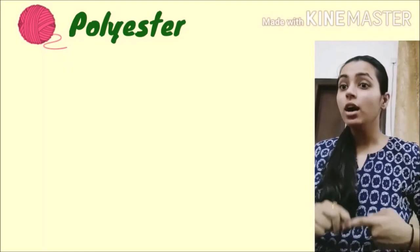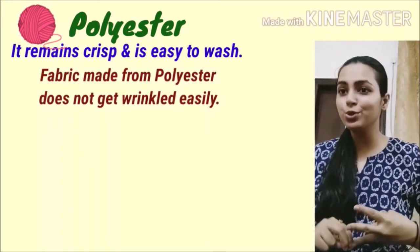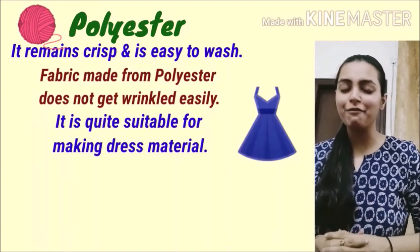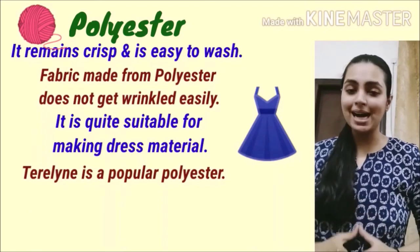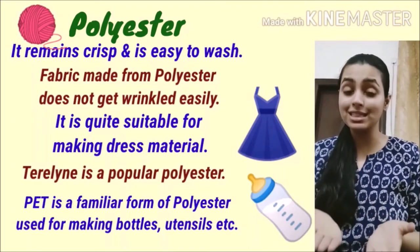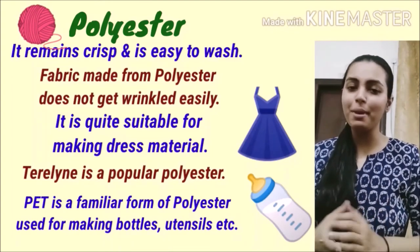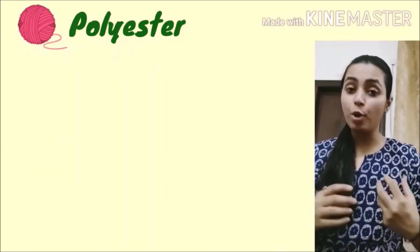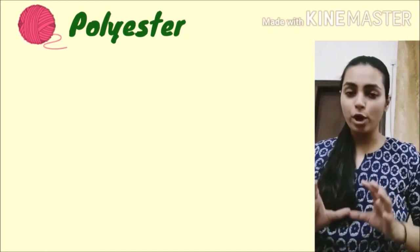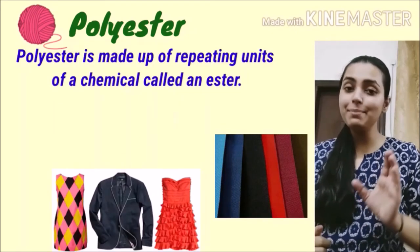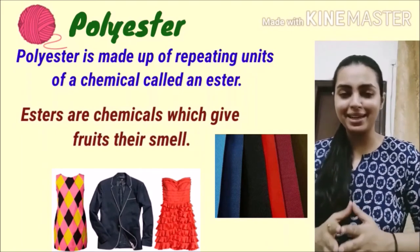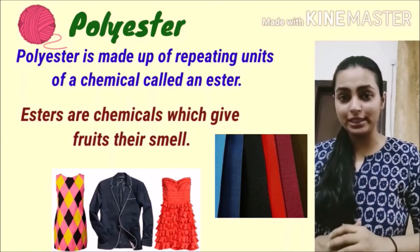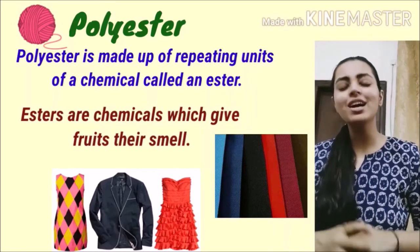Ab hum baat karte hain polyester ki. Polyester ki properties ki baat karein toh: yeh crisp rehta hai, bahut jaldi wrinkle nahi hota, easy to wash hai — aur isliye dress material banane ke liye kaafi zyada use kiya jata hai. Terylene ek bahut famous form of polyester hai, aur PET (jo hum bottles mein sunते hain — pet bottles) bhi polyester ka ek form hai. Polyester naam do words se bana hai: poly (many) aur esters (chemical substances). Esters ki fruity smell hoti hai — fruits ki jo smell hoti hai woh bhi esters ki wajah se hoti hai.